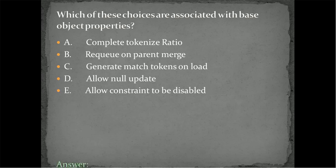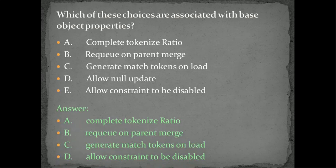I hope you got the right answer. The right answer is complete tokenization ratio, requeue on parent merge, generate match tokens on load, and allow constraint to be disabled. Allow null updates is available at staging table, not at base object.